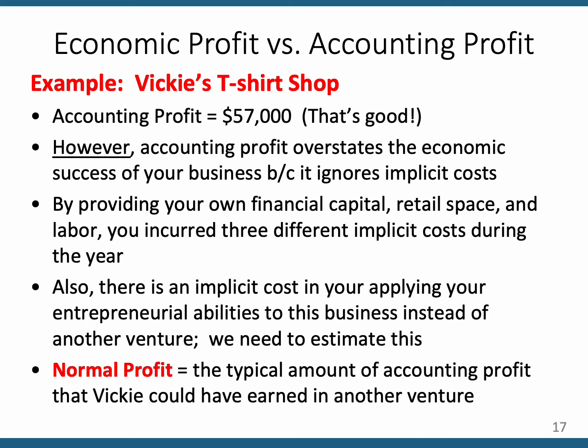These are the implicit costs, plus there's one more: normal profit. That's the amount of money you would expect to receive as compensation for applying your entrepreneurial skill to this business — or alternatively, whatever profit you would have earned in the second-best type of business venture. We include that as an implicit cost, an opportunity cost, because you gave up the opportunity to start a different kind of business where you would have been compensated that amount.